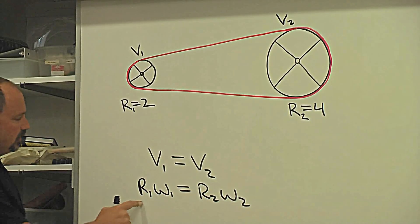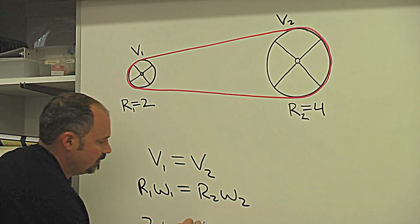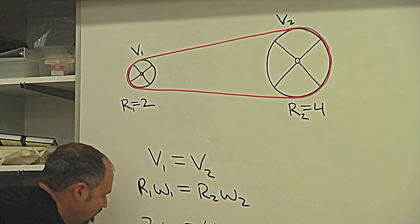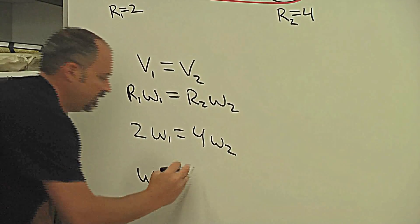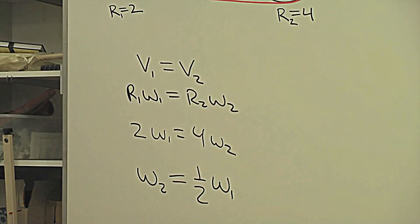So let's plug in r1 omega 1 equals r2 omega 2. And we know that this is, we gave it a factor of 2 and this guy a factor of 4. So I can now see that the angular speed of the big sprocket is one-half the angular speed of the small sprocket.